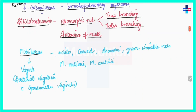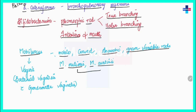Next we have Mobiluncus. These are motile, curved, anaerobic, gram-variable rods. We have two subspecies of Mobiluncus — Mobiluncus mulieris and Mobiluncus curtisii — and these are isolated from the vagina in cases of bacterial vaginosis.